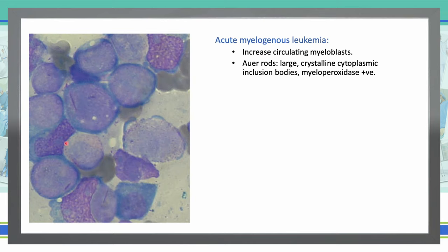Acute myelogenous leukemia shows increased circulating myeloblasts, and the characteristic feature is Auer rods — large crystalline cytoplasmic inclusion bodies that are myeloperoxidase positive.